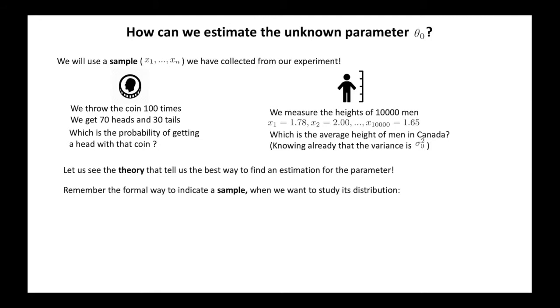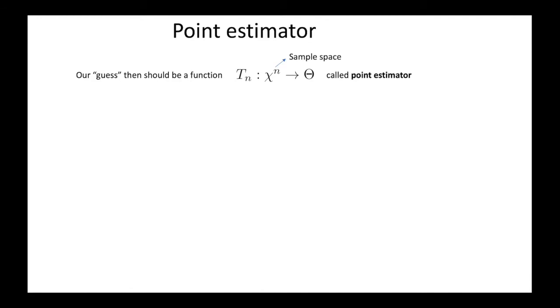Remember that when we are studying a sample from an experiment, we use the notation on the slide. Every repetition of the experiment is a random variable and all the repetitions are independent and follow the same distribution f(x, theta). Since we need to use a sample to guess the value of the parameter, what we need is a function, say T_n, which goes from our sample space — representing all the values that my sample can take — to the parameter space, theta capital, the subset of values that our parameter can take. Every such function is called a point estimator.